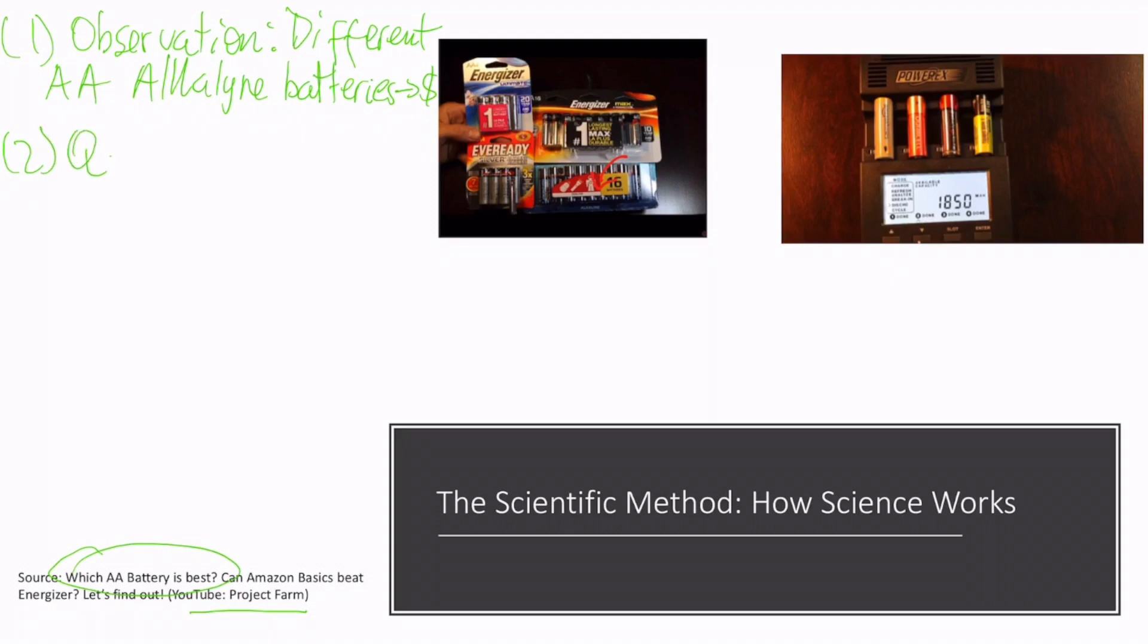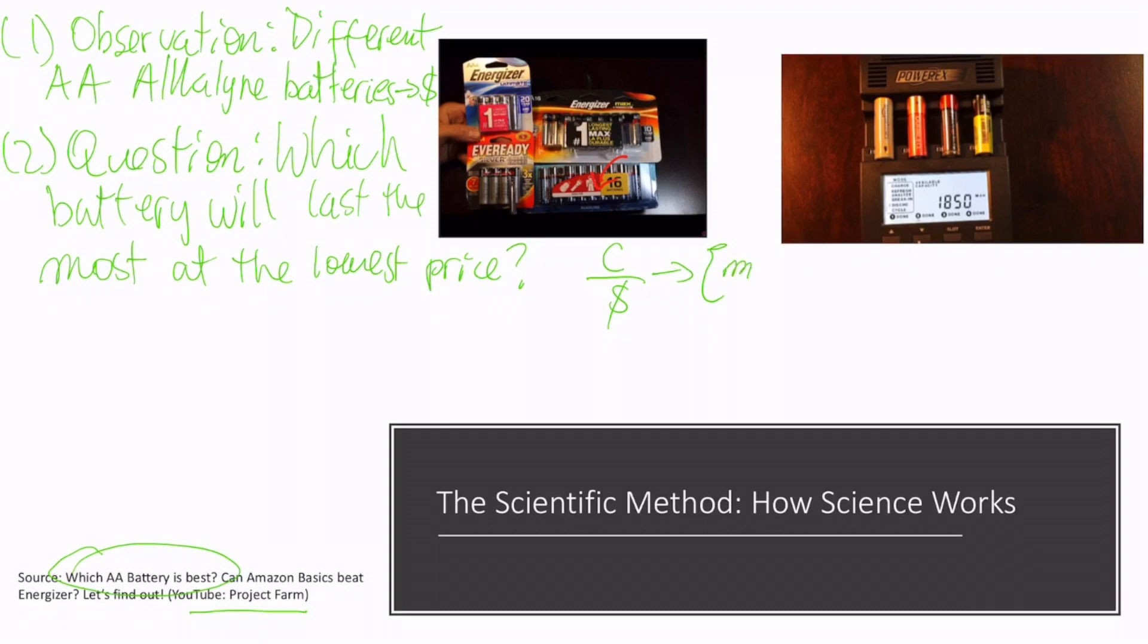The second step is to ask a question. In this case, the question is which one of these batteries will last the longest and cost us the lowest price. For this, we need to know the capacity of each battery to store energy and divide it by its price. The units to measure these are in milliamp hour per cent of a dollar. We will talk about units in later lectures.